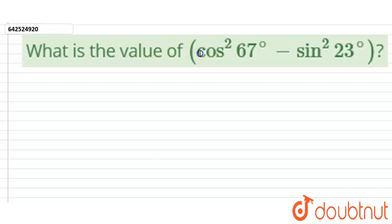Let's start this question. We need to find the value of cos²67° minus sin²23°.